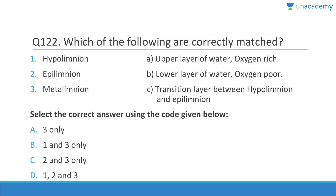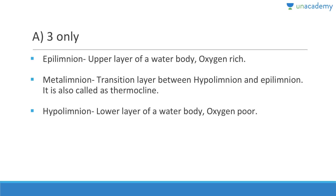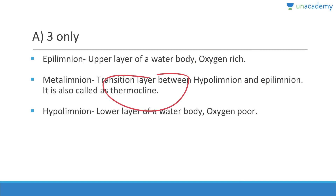Hypolimnion is the lower layer of water, oxygen-poor. Epilimnion is the upper layer of water, oxygen-rich. Metalimnion is the transition between hypolimnion and epilimnion — that is correct; the answer is three only. It is also called the thermocline because of the sharp fall in temperature there.